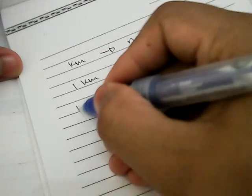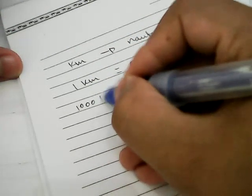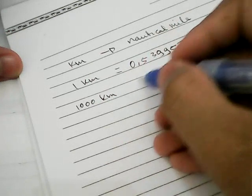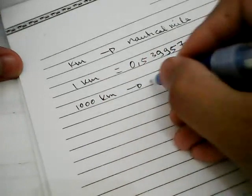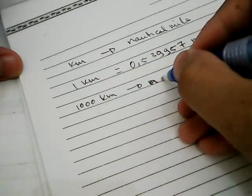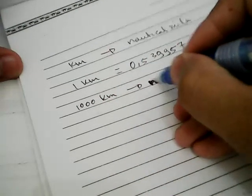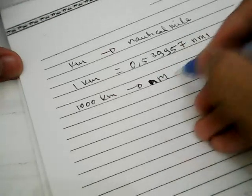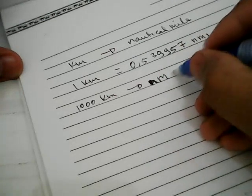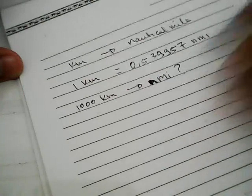I want to know how much is 1,000 kilometers converted into nautical mile. This is a nautical mile. How much is it?